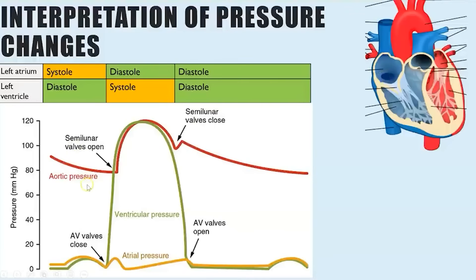Looking at the semilunar valves on the graph: they're positioned between the ventricles and the arteries. Behind a semilunar valve is the ventricle; in front is the aorta. The semilunar valve opens when ventricular pressure exceeds aortic pressure — that's the point where the lines cross and the valve is forced open. It remains open until the aortic pressure exceeds ventricular pressure, which is what causes the semilunar valves to shut.